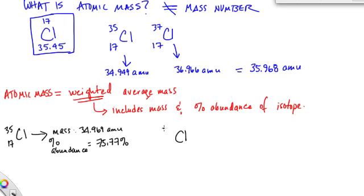Chlorine-37 has a mass of 36.966 AMUs, and its percent abundance is 24.23%. So 24.23% of all chlorine isotopes are chlorine-37 isotopes.